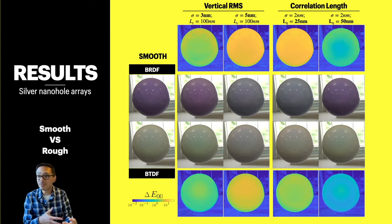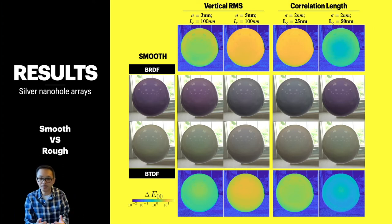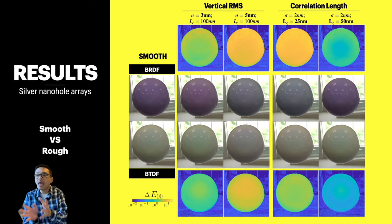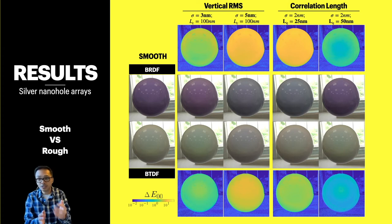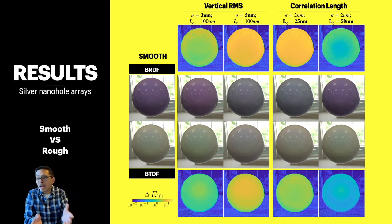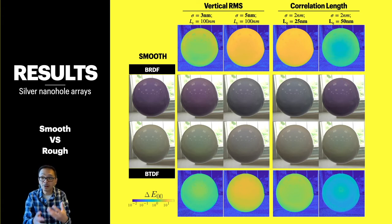We use our multi-scale approach to study the color difference due to roughness, comparing smooth versus rough silver nanohole arrays. We present both BRDF and BTDF colors. Due to roughness, there is an obvious color difference between the smooth and rough cases, visible in the renderings and confirmed by delta-E color difference calculations. The color difference becomes more obvious with higher vertical RMS values, such as 5 nanometers, and lower correlation lengths, such as 25 nanometers.